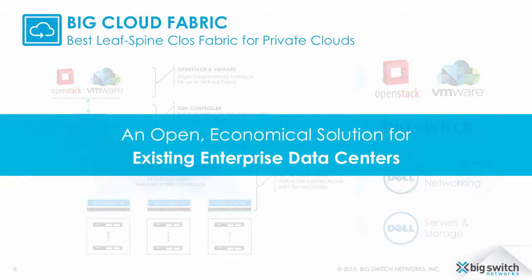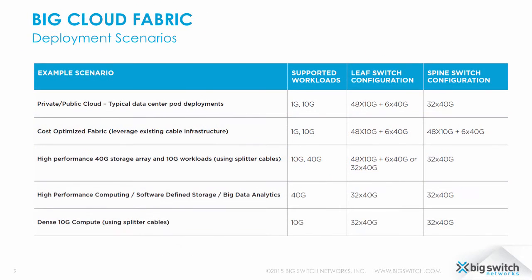The result is an entire data center fabric managed as one big switch — simply, scalably, and economically. Big Cloud Fabric is also flexible. Because of our open commodity components, it can be deployed in a number of 1GB, 10GB, and 40GB combinations to meet requirements ranging from cloud services to high-performance storage to HPC and big data.